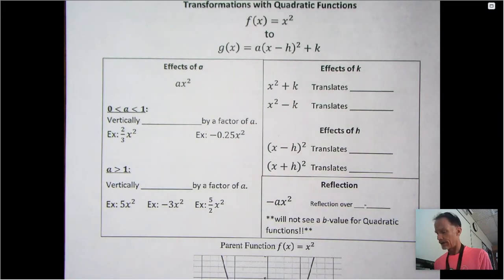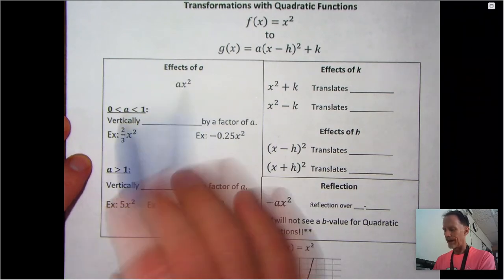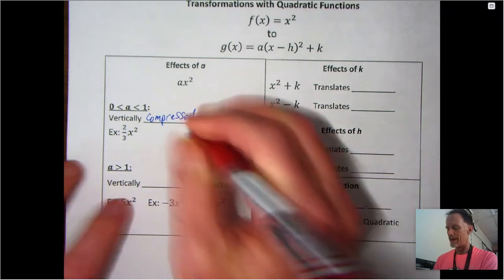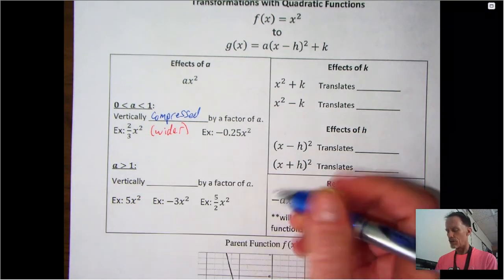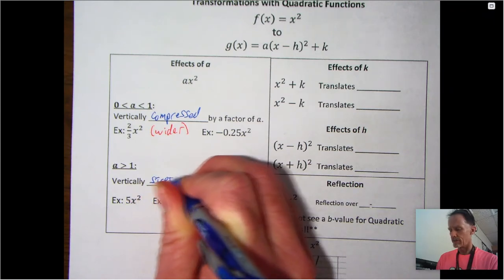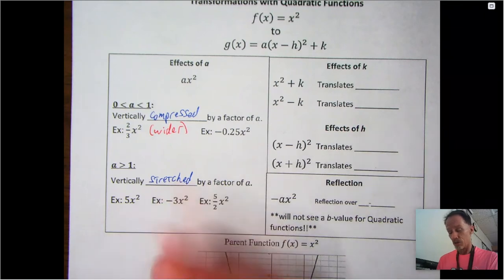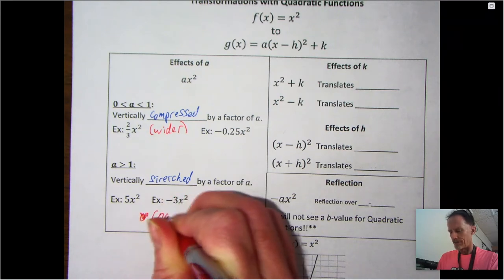These transformations are no surprise — you could probably pause the video and fill these out based on what you already know about parent functions. Just like normal: if your a value is less than one, that's a vertical compression, which visually makes the parabola wider or fatter. If a is greater than one, that's a vertical stretch, which makes it skinnier or narrower.